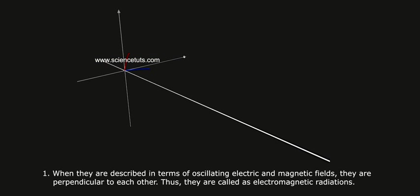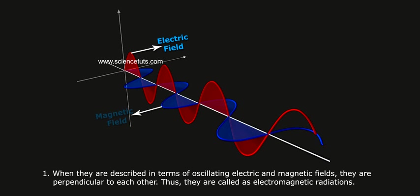When they are described in terms of oscillating electric and magnetic fields, they are perpendicular to each other. Thus, they are called as electromagnetic radiations.